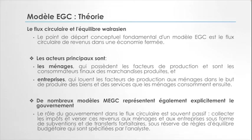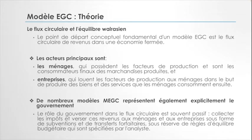De nombreux modèles d'équilibre général représentent aussi le gouvernement, qui joue le rôle de l'État dans le flux circulaire. Ce rôle est souvent passif : collecter les impôts et verser ses revenus aux ménages et aux entreprises. L'État peut aussi revenir sous forme de subventions, d'aides sociales, et de diverses activités. Lorsque l'État réalise un budget, il essaie d'analyser s'il a un surplus ou pas, et comment il peut aider l'autre partie de l'économie.